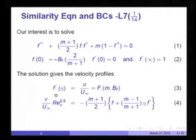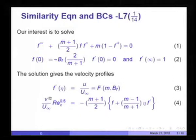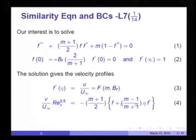Our solution is for the velocity profile f'(η) = u/u∞, which is a function of the pressure gradient parameter, because u∞ is a function of m, and of b_f, which arises from the manner in which V_w, the wall velocity, varies. Once we solve this equation, we get f and f' variations from which we obtain the velocity distribution v as well as u as a function of y.